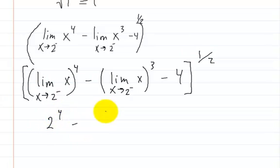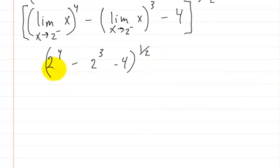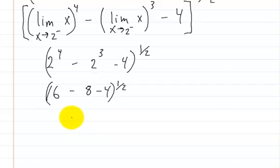Plugging in 2: 2 to the fourth power is 16, 2 cubed is 8 (with the negative it becomes −8), minus 4 — all square rooted. So we get the square root of 16 minus 8 minus 4, which is the square root of 4, equal to 2. That's the answer.